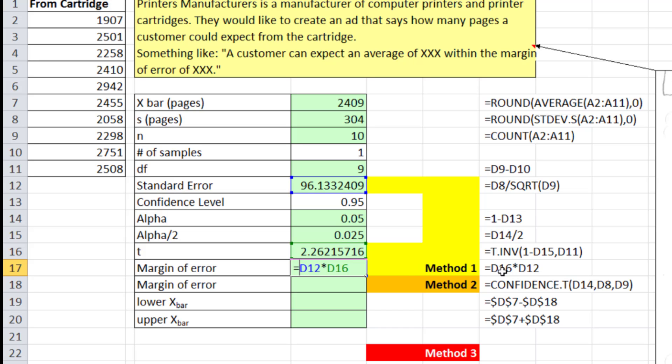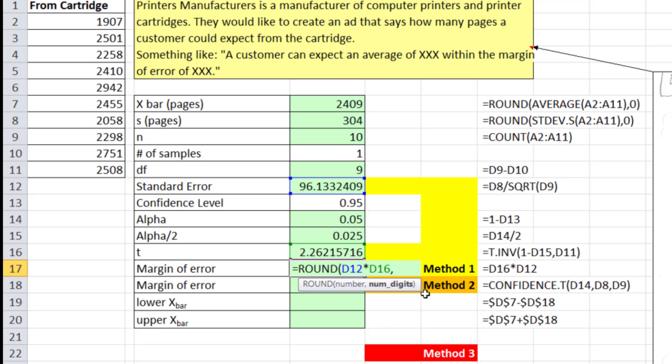Now, we could round this one, too. I don't have the round over here. Round. And then we come to the end, comma, 0 to the integer. So 217 pages. Now, here we calculate our margin of error in a few steps. We did the standard error, the t dot inverse, and then calculated our margin of error using those inputs.